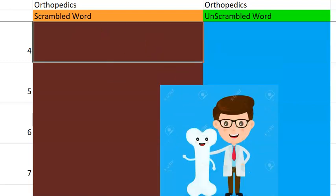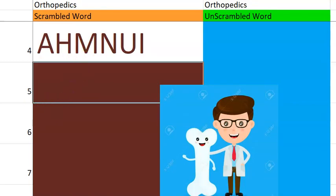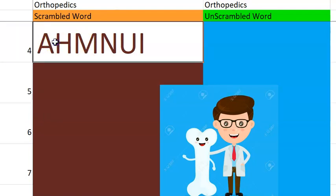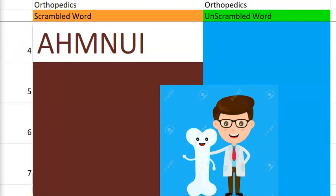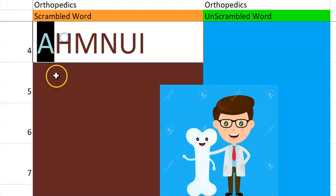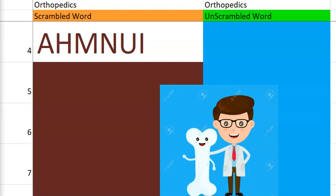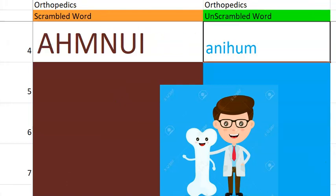Let's go to the fourth one. What do you think this is? It is starting with an A. You can also say it's dactylosis spontanea, something which is involving the digits, the fingers. What do you think this one is? Ainhum. Very good.